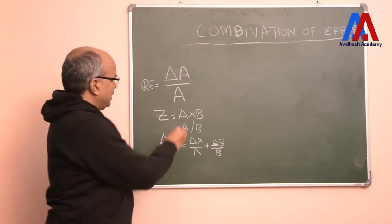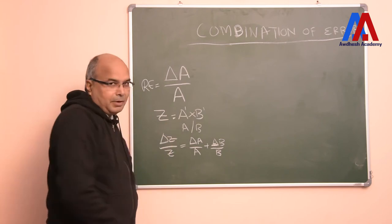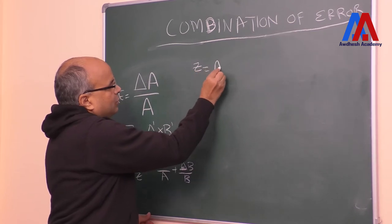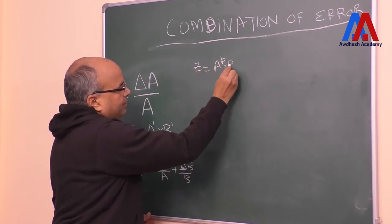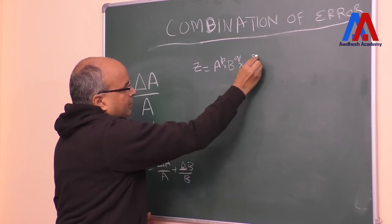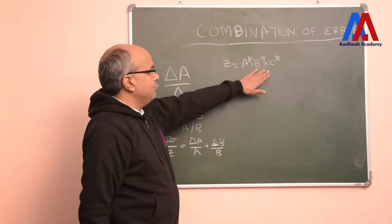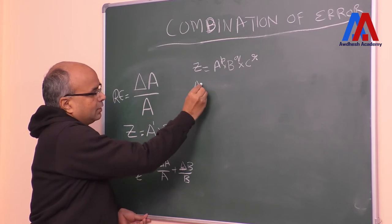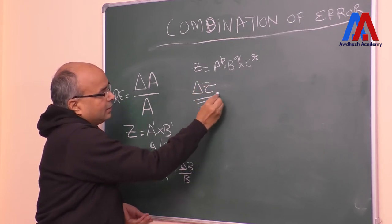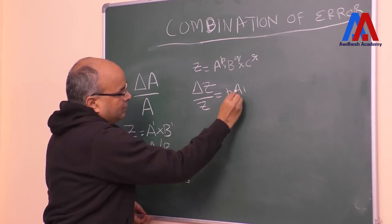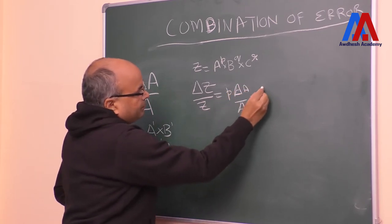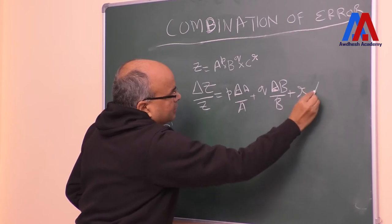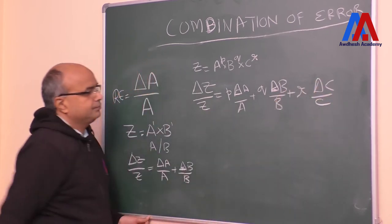Now this is the simple case where dimensions are to the power 1. But many times the problem can be more complex. If we know that z is equal to a to the power p, multiplied by b to the power q, multiplied by c to the power r, you can see there are three variables each raised to a power. In this situation, the relative error delta z by z will be equal to p times delta a upon a, plus q times delta b upon b, plus r times delta c upon c.